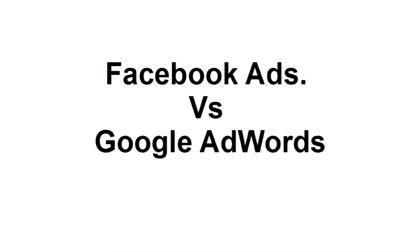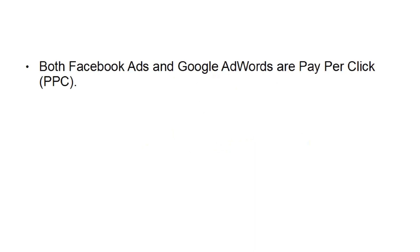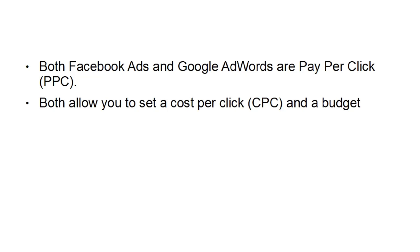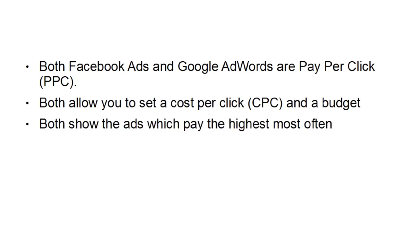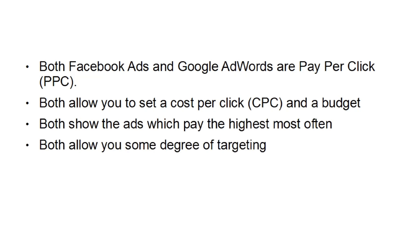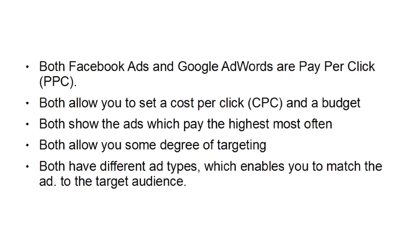So what's the difference between advertising via Facebook ads and advertising via Google AdWords? Well, there are certain similarities. Both Facebook ads and Google AdWords are pay-per-click, or PPC — at least, Facebook does have a PPC option. Both allow you to set a cost-per-click, otherwise known as a CPC, and a budget. Both will show ads which pay the highest most often. Both allow you some degree of targeting, and both have different ad types which enables you to match the ad to the target audience. But that's about where the similarity ends.